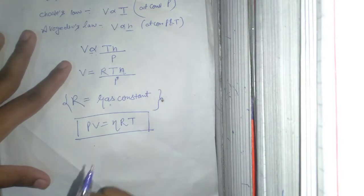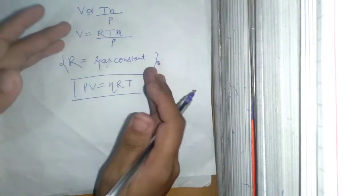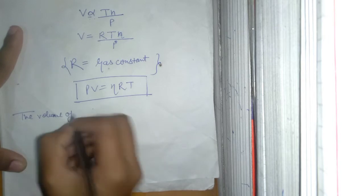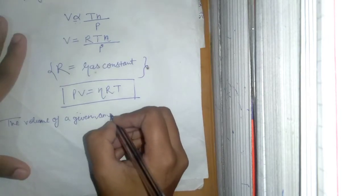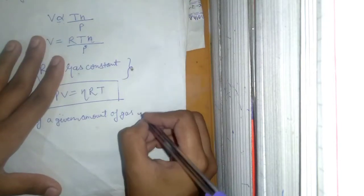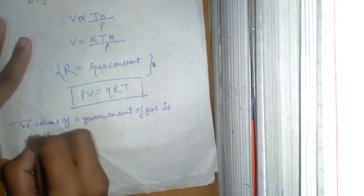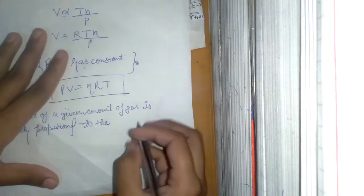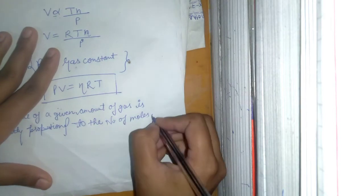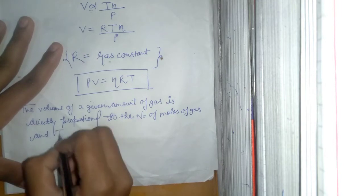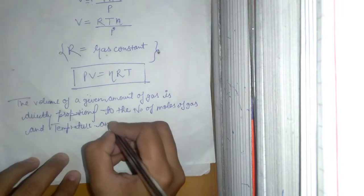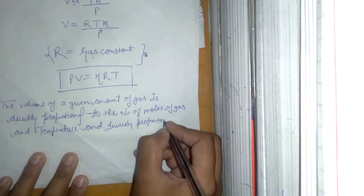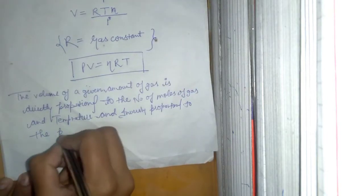PV is equal to nRT — this is our ideal gas equation. If you want to describe it in words: the volume of a given amount of gas is directly proportional to the number of moles of gas and temperature.